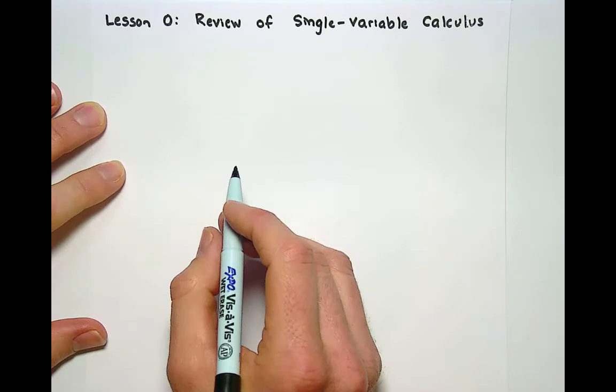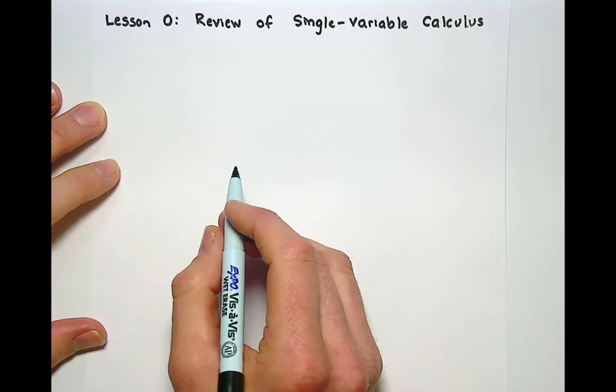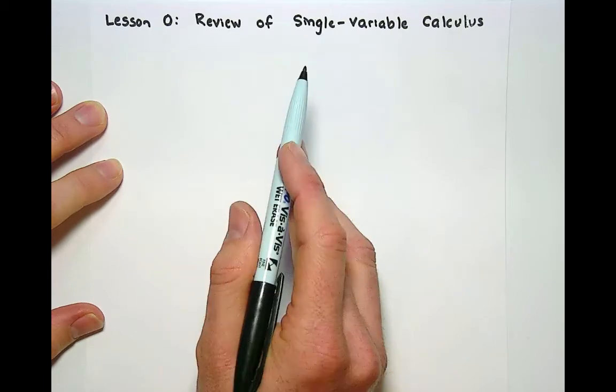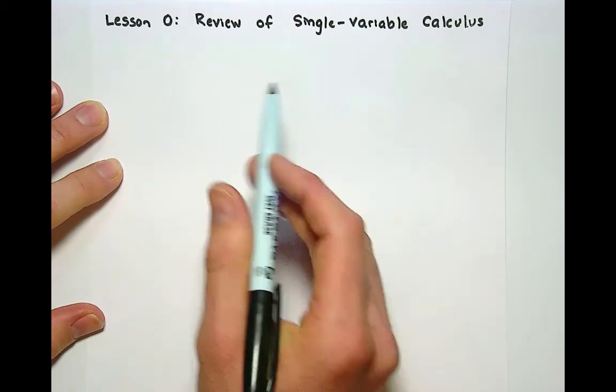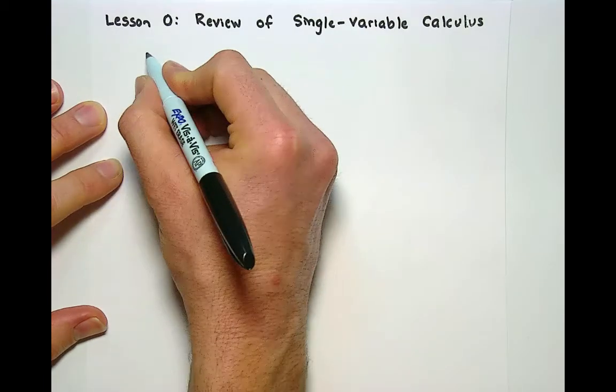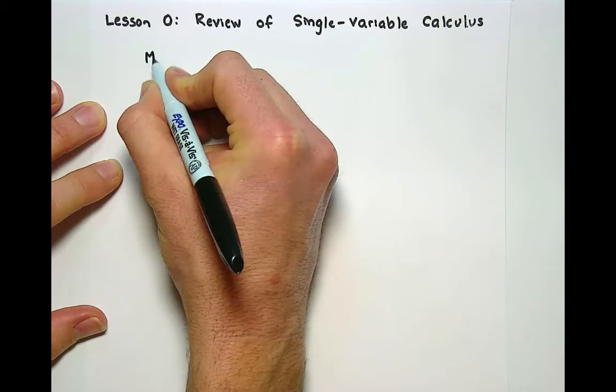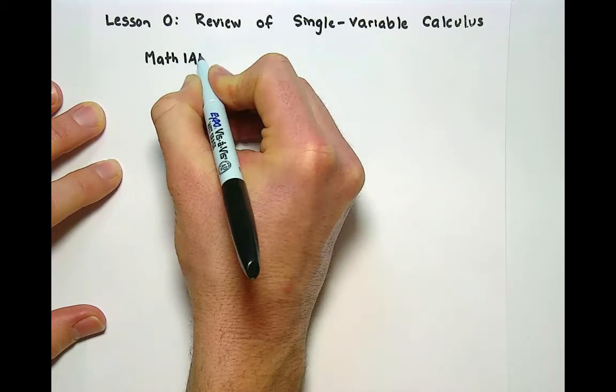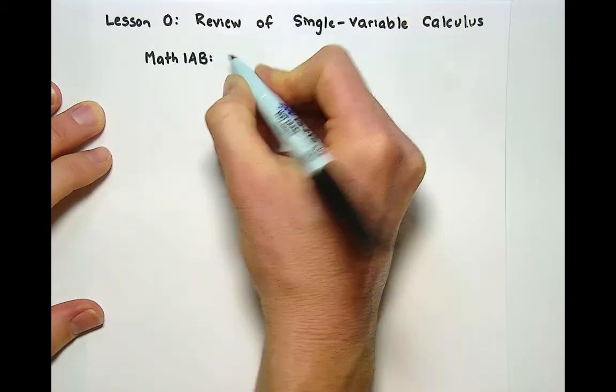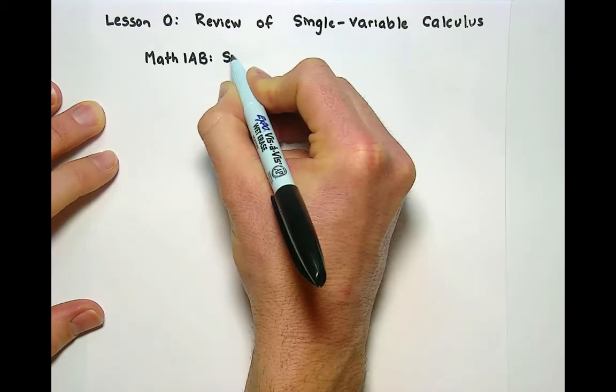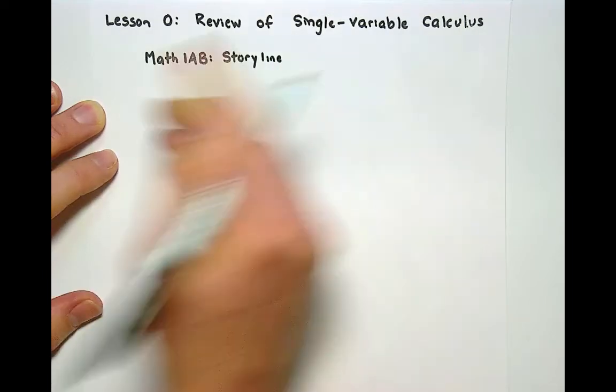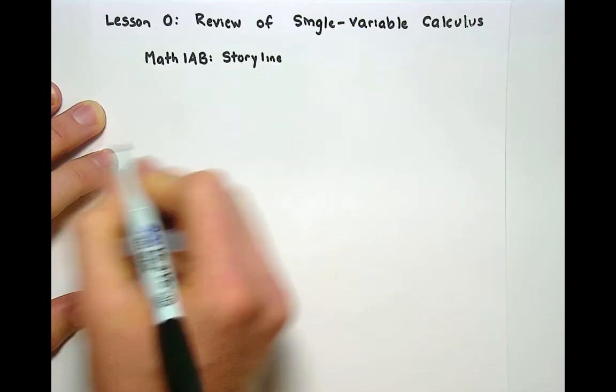In your previous two calculus classes you studied a very specific set of problems related to single variable calculus. At Foothill College those first two calculus classes are known as Math 1A and 1B. In those classes there is a specific storyline that you follow.